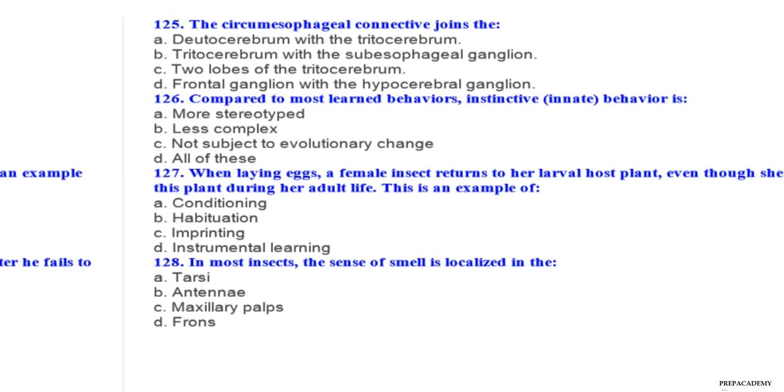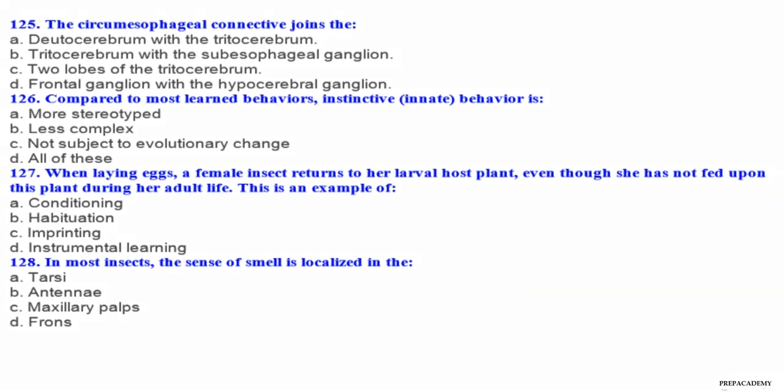Question 125. The circumesophageal connective joins the: A deutocerebrum with the tritocerebrum, B tritocerebrum with the subesophageal ganglion, C two lobes of the tritocerebrum, D frontal ganglion with the hypocerebral ganglion. Question 126. Compared to most learned behaviors, instinctive (innate) behavior is: A more stereotyped, B less complex, C not subject to evolutionary change, D all of these.